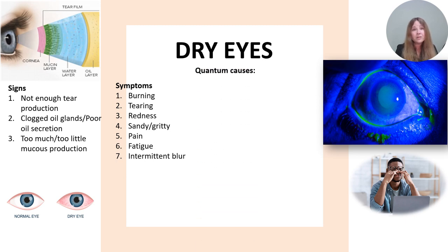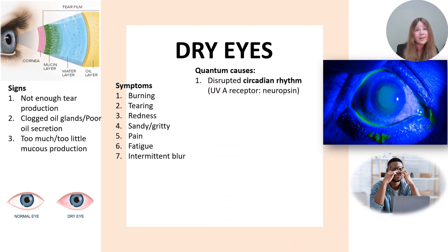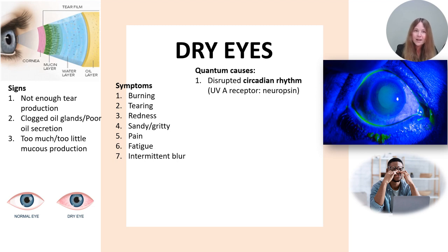While there may be other causes of dry eyes, I'm only going to concentrate on the quantum causes. First is poor circadian rhythm. When we chronically miss that morning sunshine and sunshine throughout the day, we just don't have the proper hormones or the proper energy we need to stay healthy and hydrated. Remember that the eyes are a hormone-making organ, and we have UVA receptors called neuropsin actually on the cornea, so we need some UVA light to be absorbed to make hormones and energy for our body through our eyes.